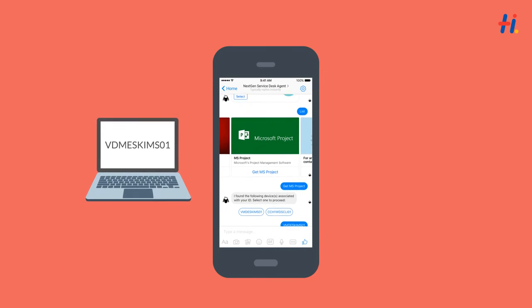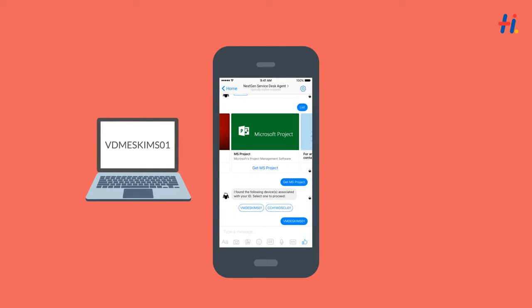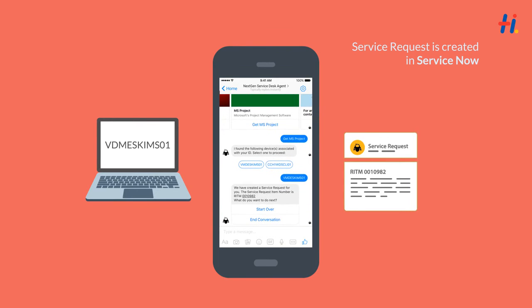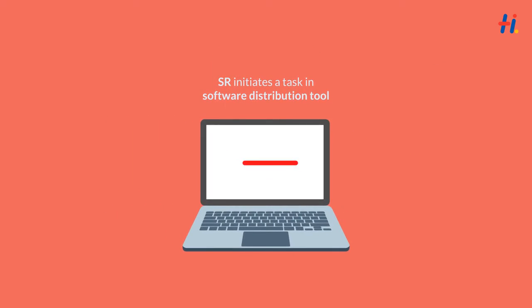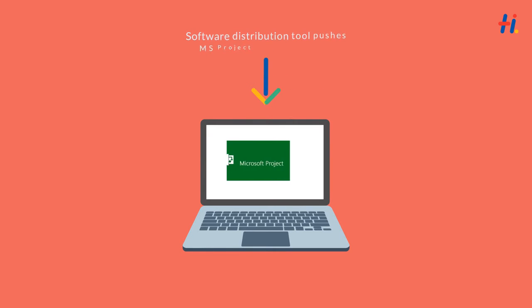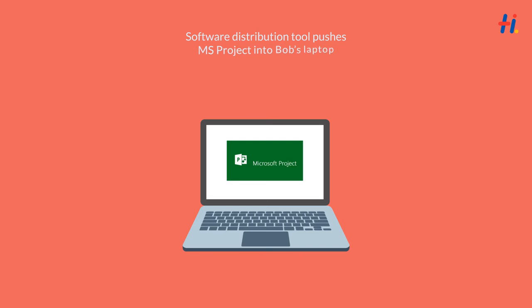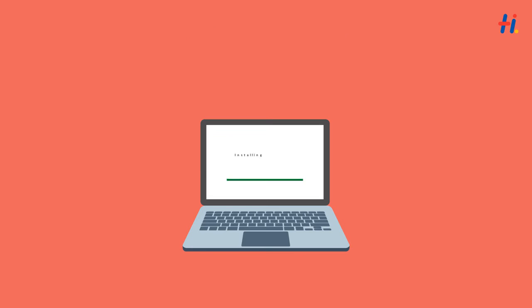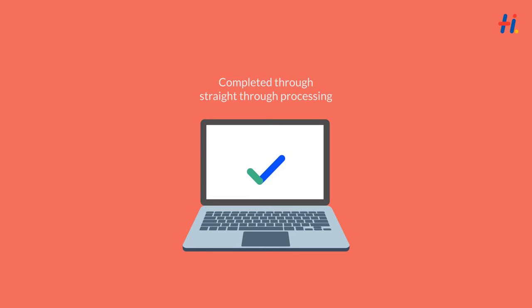Bob selects his laptop and in a few steps, a service request for MS Project installation is created. When a service request is created, it initiates a task in the software distribution tool, which in turn pushes the software to Bob's laptop. The entire process is executed through straight-through processing in a short span of time.